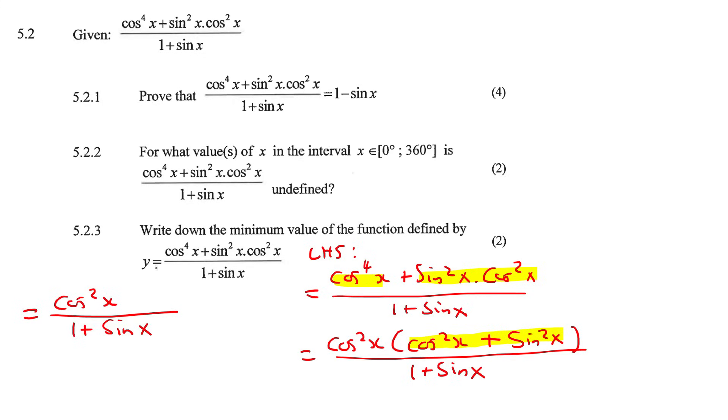Now what I would do is I would actually change cos squared x to 1 minus sin squared x, because we know sin squared x plus cos squared x is always equal to 1. The reason I've done that is because now this can become a difference of squares, because you've got two terms separated with a negative, and 1 times 1 gives you this, and sin times sin gives you that.